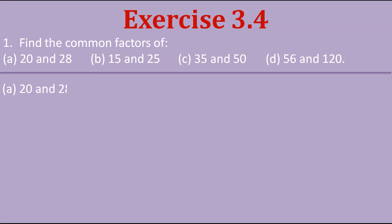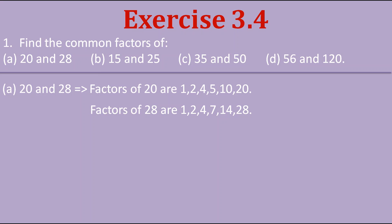The first question asks us to find the common factors of 20 and 28. To find common factors, we first find the factors of each number. The factors of 20 are 1, 2, 4, 5, 10 and 20, and the factors of 28 are 1, 2, 4, 7, 14 and 28. Here 1, 2 and 4 are common. So the common factors of 20 and 28 are 1, 2 and 4.